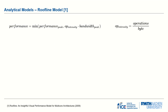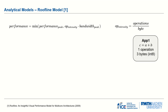The roofline model is an analytical model first proposed in 2009 as a visual performance model for multi-core architectures. It assumes that every application running on a compute system is either bound by its maximum compute performance or by its memory speed, expressed as operational intensity times bandwidth. The term operational intensity is defined as the number of operations divided by the number of bytes. For example, a simple addition is one operation; assuming a one-byte data type, we have two reads (A and B) and one write (C), making three bytes in total — so the operational intensity is one-third.